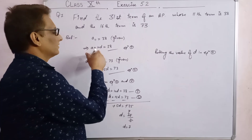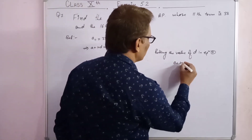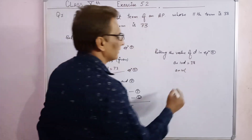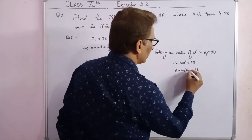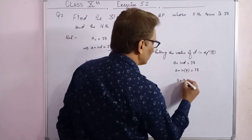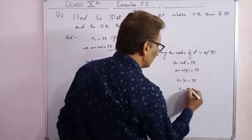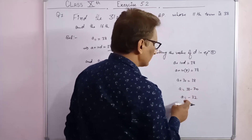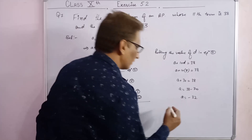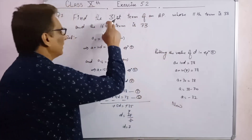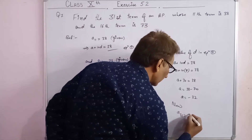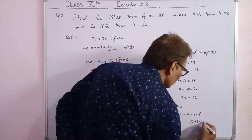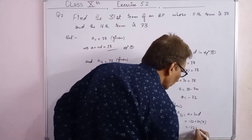Putting the value of d equals 7 in equation 1: a plus 10 into 7 equals 38, so a plus 70 equals 38, giving a equals 38 minus 70 equals minus 32. Now finding the 31st term: a31 equals a plus 30d equals minus 32 plus 30 into 7 equals minus 32 plus 210.